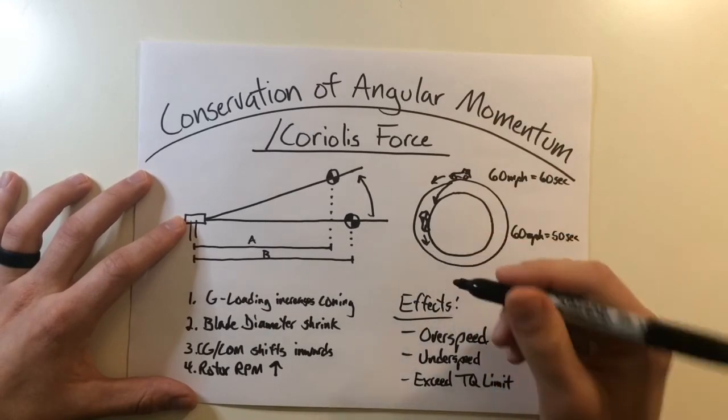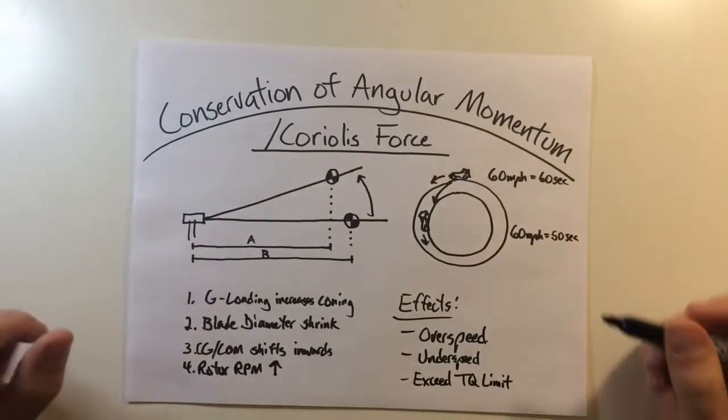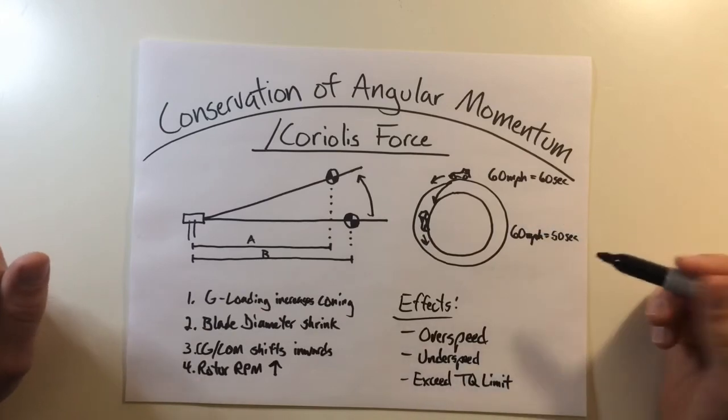when you're flying around, the quicker and more aggressive the maneuver, the greater the torque fluctuations are going to be. But that wraps up conservation of angular momentum slash Coriolis force.